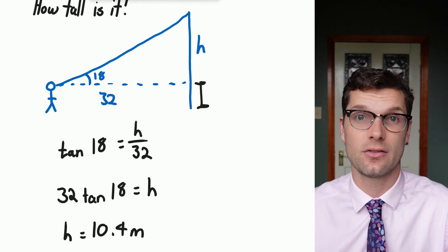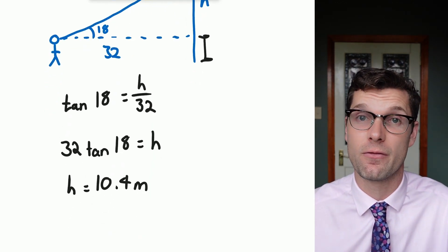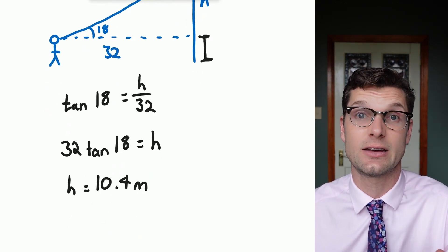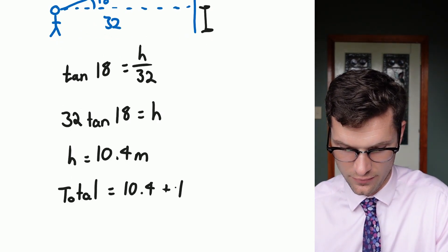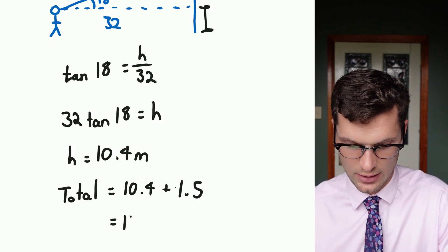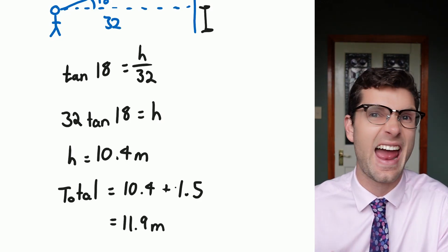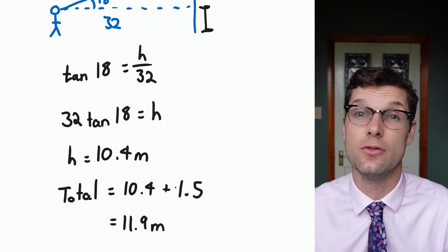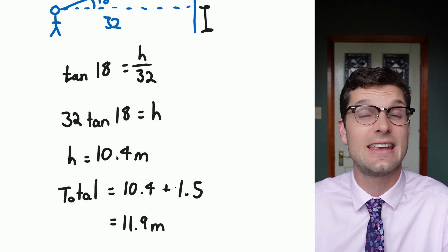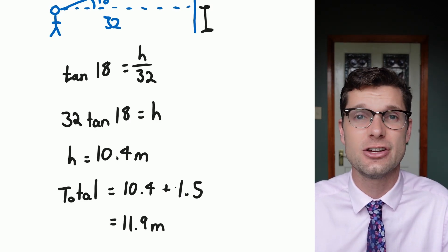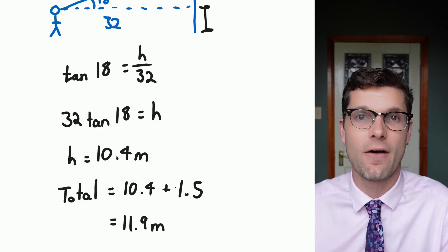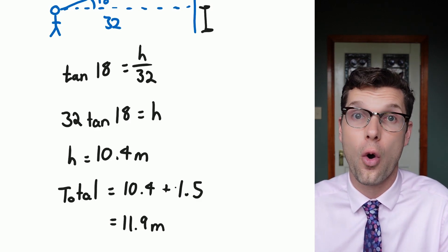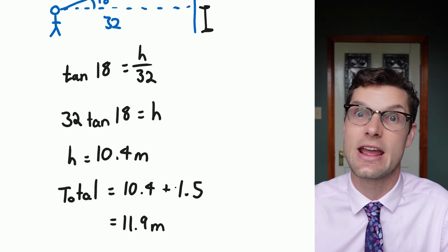Just remembering that we do have that last 1.5 in order to get the correct building height. So we've got the total height is 10.4 plus 1.5, which is equal to 11.9 meters. And that's all the working that we have to do for this question. The angle of depression or elevation is exactly the same as our normal trig problems. We're either trying to find an unknown side or an unknown angle, just using our trig ratios.